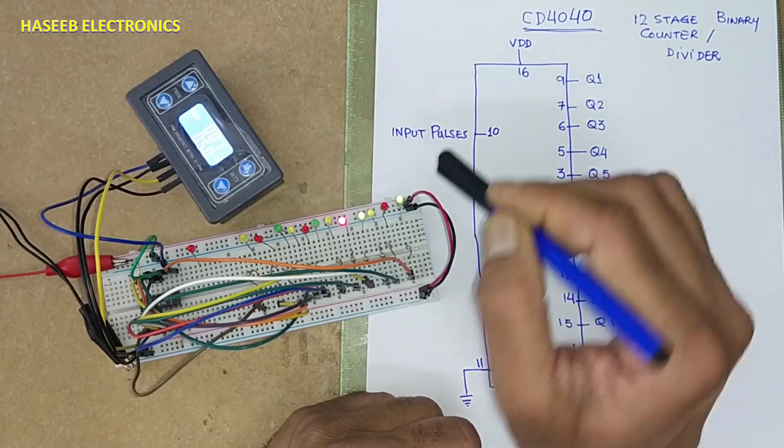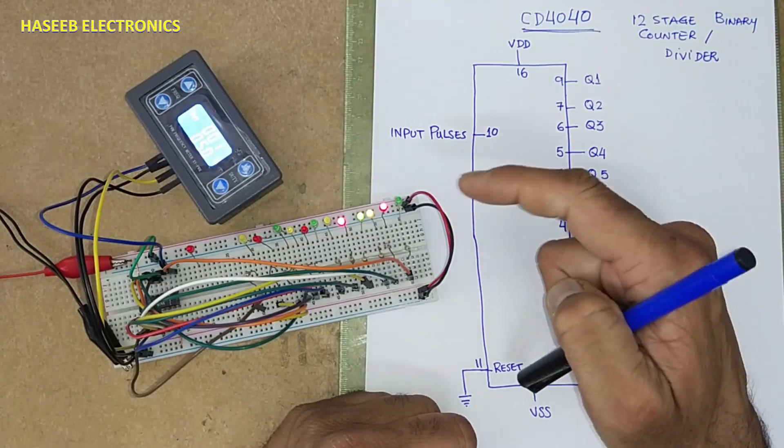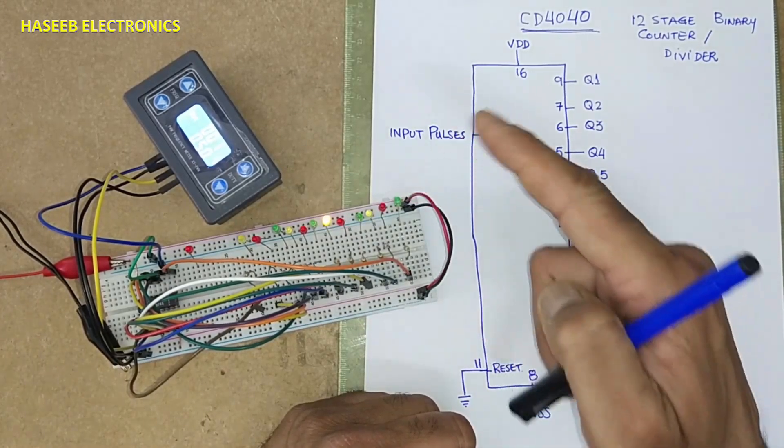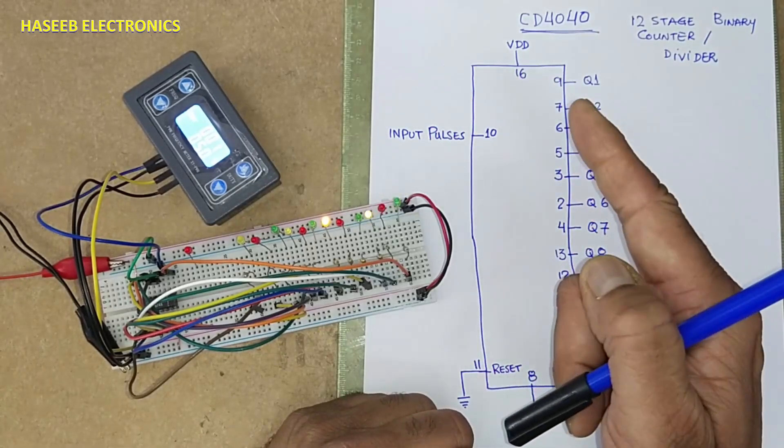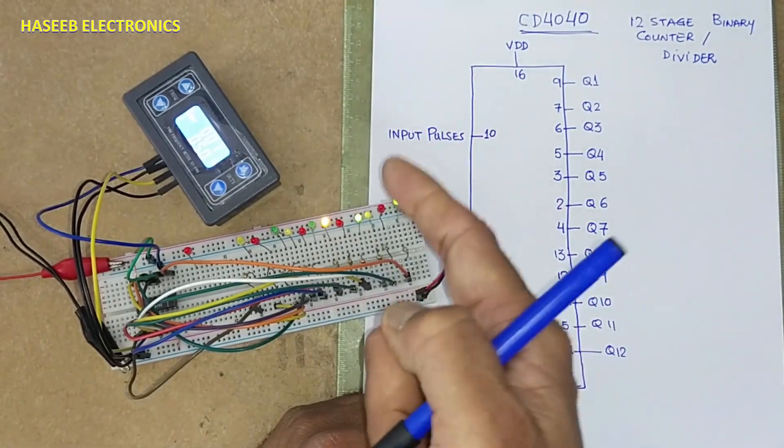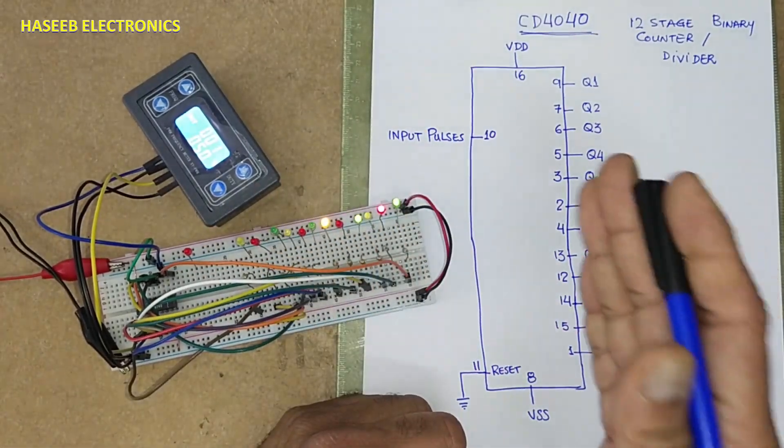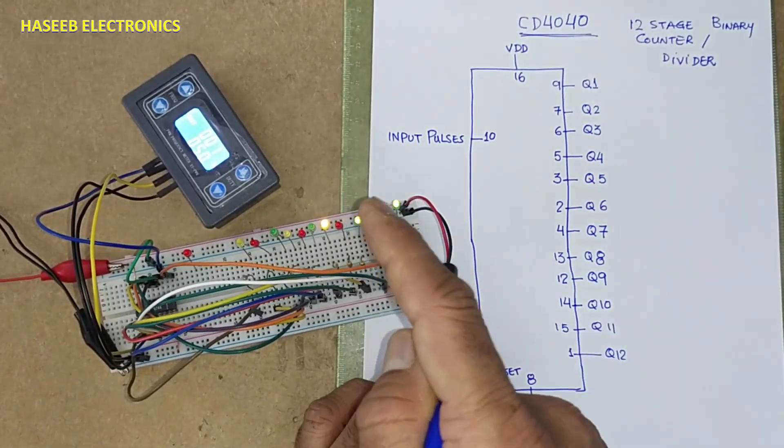Each step will shift at trailing edge. This flip flop at first trailing edge it will turn on and second trailing edge it will turn off. When it will turn off, its trailing edge will trigger the second. So each stage will need two pulses to move to next condition.